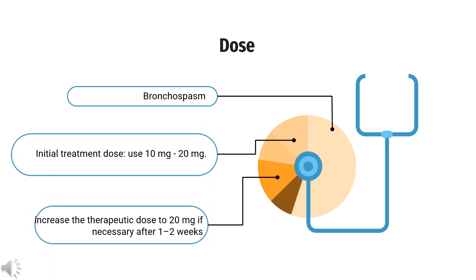Dose. Initial treatment dose: use 10 mg to 20 mg. You may increase the therapeutic dose to 20 mg if necessary after 1 to 2 weeks, depending on clinical efficacy. In patients who are well-tolerated by a prior beta-2 agonist, the recommended starting and maintenance dose is 20 mg. For children from 2 to under 6 years old, the dose is 10 mg once per day.